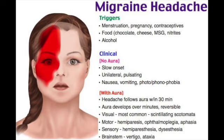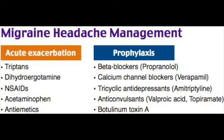Ergotamines have more adverse effects compared to triptans as they cause systemic vasoconstriction. Antiemetics like metoclopramide and prochlorperazine may be used, especially with nausea and vomiting. For prophylactic preventative medications, use antihypertensives especially non-selective beta blockers like propranolol, calcium channel blockers, TCAs, anticonvulsants like valproate or topiramate, and NSAIDs.